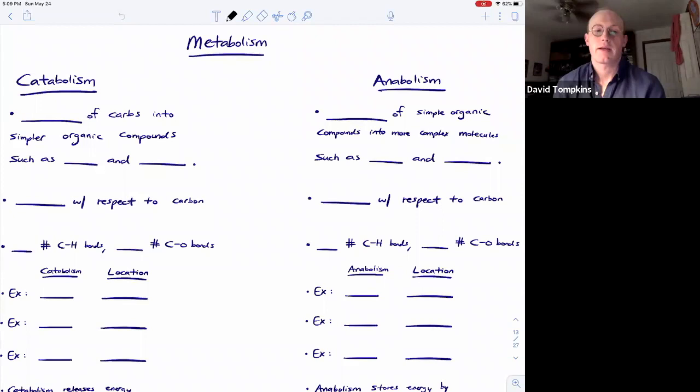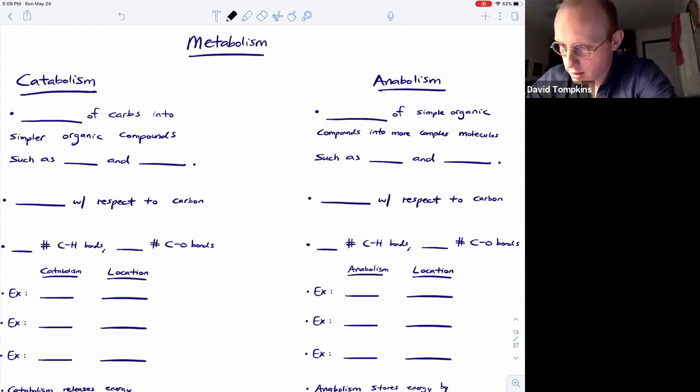Okay, so in this video I'm going to begin a series of lectures discussing metabolism and the various mechanisms of energy conversion. Metabolism can be broken down into two subtypes: catabolism and anabolism. We will spend the majority of our time in this course discussing catabolic pathways, or those that involve the breakdown of complex biomolecules such as carbohydrates into simpler organic compounds including pyruvate, which we will see at the end of glycolysis.